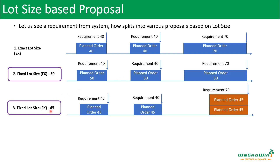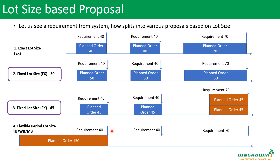If the lot size is 45, the requirement of 40 generates a planned order of 45, then 40 again generates 45. For the requirement of 70, one lot of 45 gives a total of 135 against a total requirement of 150, so the system creates another 45. So when the fixed lot size is reduced, you are actually procuring more — 45 plus 45 plus 45 plus 45 equals 180, though the total requirement is only 150. Both business users and consultants should clearly understand this behavior: putting different lot sizes creates proposals in different ways.